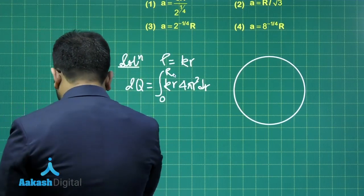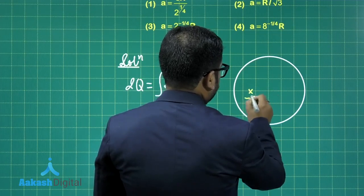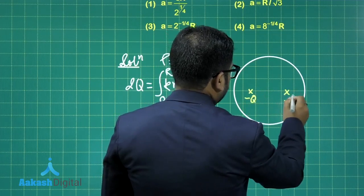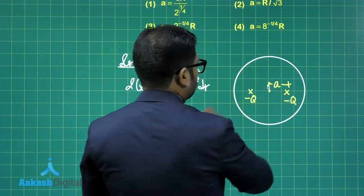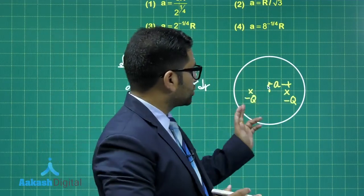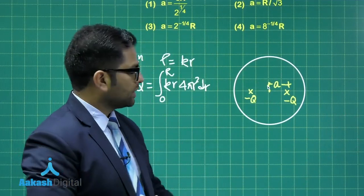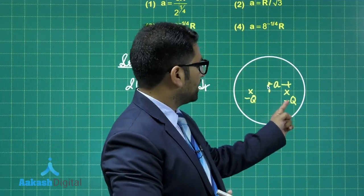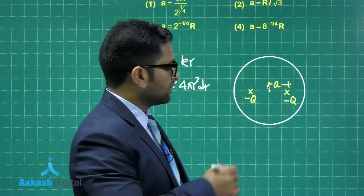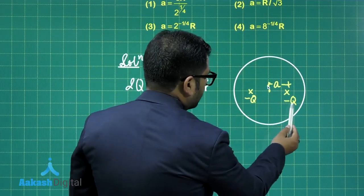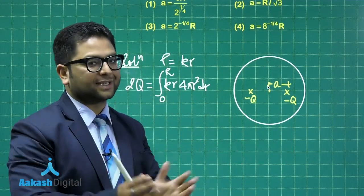The integration of volume charge density multiplied by the elementary volume from 0 to capital R has to give the total charge, which has been given as 2 capital Q. And apart from that, there are two charges. See, this is minus q, this is minus q, at a distance a from the center that has been given. And either of these charges is experiencing zero force. That means if you take this as the test one, it will experience force due to this, as well as due to sphere. So the force on 1 minus q due to this and due to the sphere should be equal in magnitude and opposite in direction.